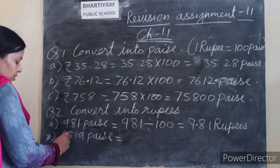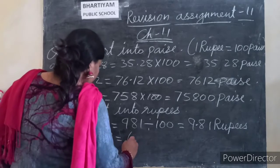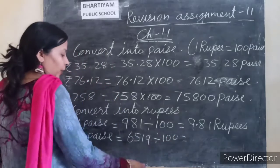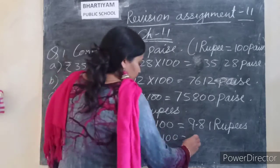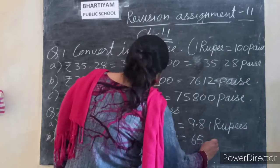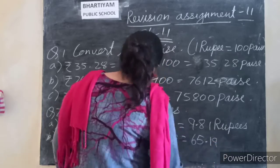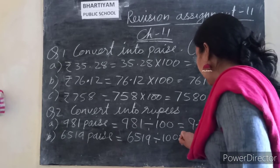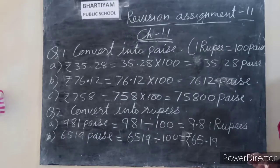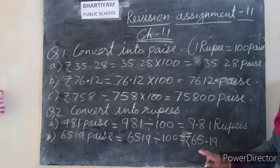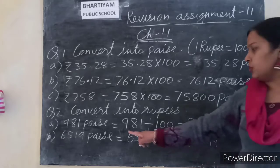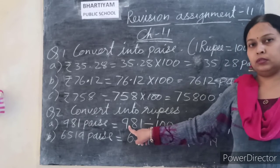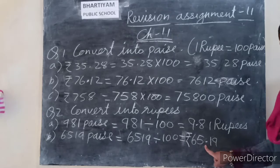Next is 6,519 paise. 6,519 divided by 100. Count two places from the right and place the point — giving 65.19. When it is a three-digit number, pay extra attention to where the point is placed.